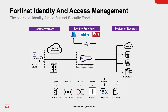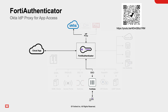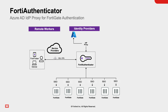FortiAuthenticator provides a centralized authentication service. Along with FortiToken, additional security is added by providing second factor authentication. This video is related to another published video where a user authenticates on FortiGate to access the cloud app and the FortiAuthenticator is acting as an IDP proxy. The link and QR code can be seen on the screen. For organizations with multiple FortiGates, FortiAuthenticator centralizes the authentication and FortiToken management.